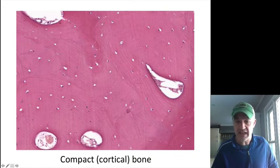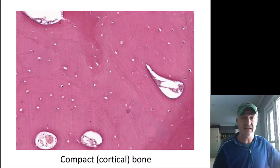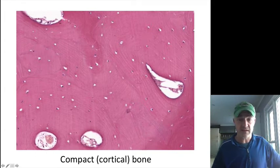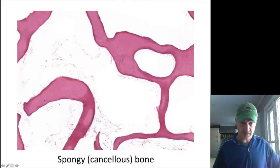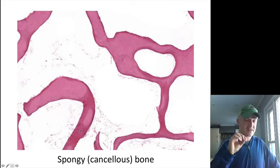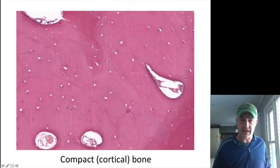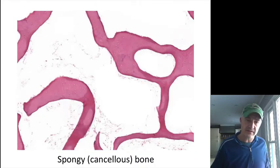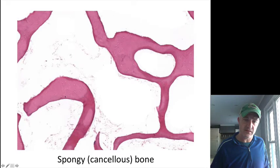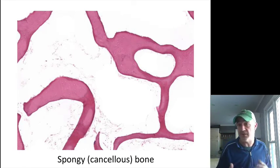On a decalcified slide you can see canals traveling through the bone and osteocytes trapped in their lacunae. In spongy bone you can see a lot of open space with little columns of bone called spicules — not nearly as thick as compact bone. Because of this, nutrients can diffuse in from blood vessels through the little canaliculi into the osteocytes. In compact bone, because it's much thicker, actual blood vessels need to travel through it.